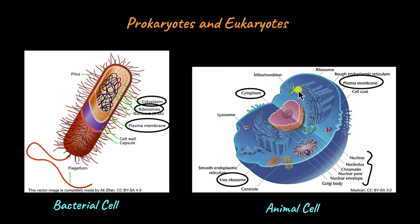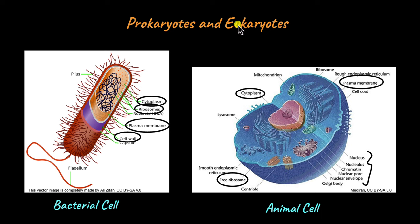We will talk more about the different organelles in eukaryotes in further videos. Prokaryotes also have a cell wall beyond their plasma membrane. I have not shown a cell wall here because this is an animal cell, and animal cells do not have a cell wall. However, protists, fungi, and plants — which are other types of eukaryotes — do have a cell wall, but their cell wall composition differs between prokaryotes and eukaryotes, and we will talk more about that when discussing prokaryotes in depth.